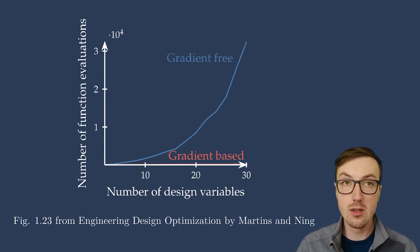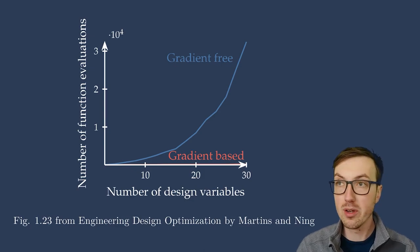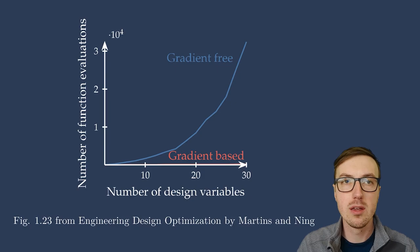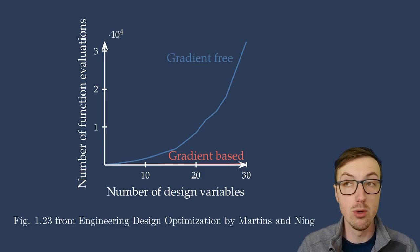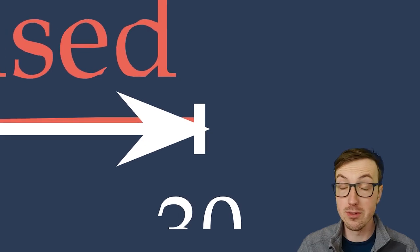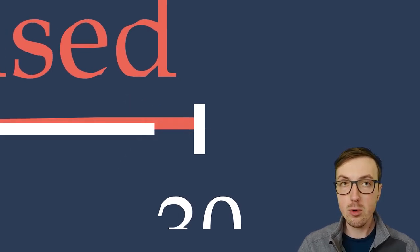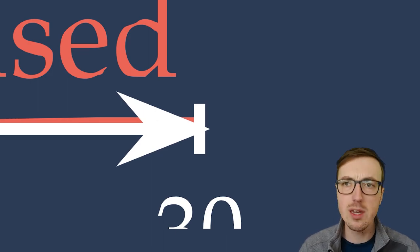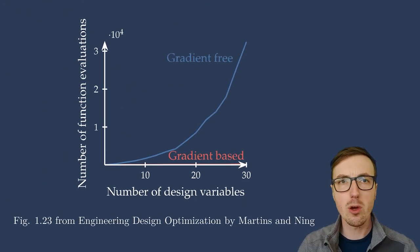Let's take a look at this. We have the number of function evaluations needed to compute an optimal point using a gradient-free method in blue and a gradient-based method in red. As we increase the number of design variables, the number of functional evaluations for the blue, the gradient-free, grows a lot. It grows into a huge number, but the red, the gradient-based, was just a small number. It's beautiful. It's very low. That's great. So we should be using gradient-based optimization because it's more efficient, and inherent within that, we need to care about derivatives.